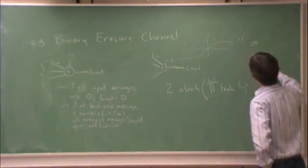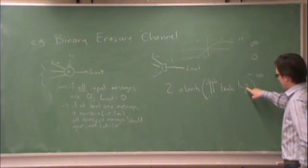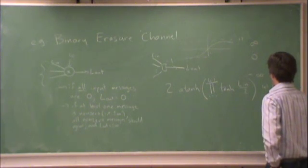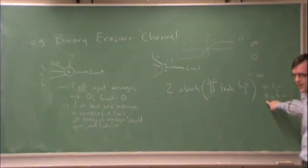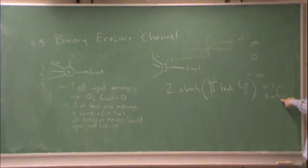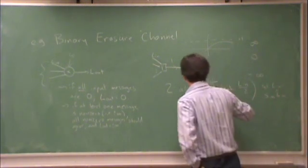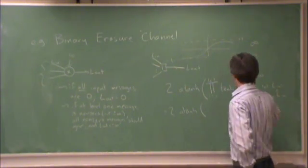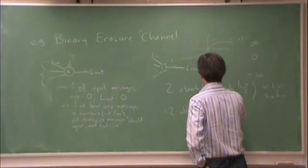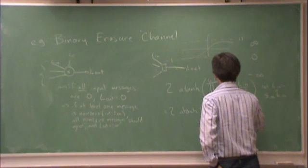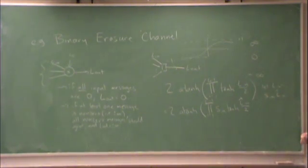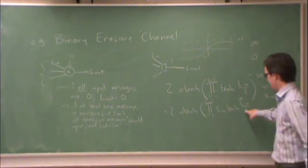So what I'm going to get, what I can do is I can take out, let's let Ln equal Sn times L hat n, where Sn is the sign of Ln, and L hat n is the magnitude. So that I can write, is equal to 2 arc tanh. Sign will come out of tanh. So tanh is an odd function, so therefore I can take the sign out.